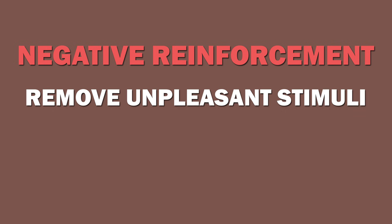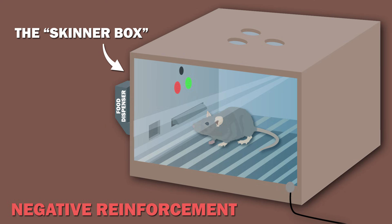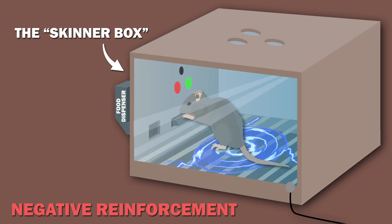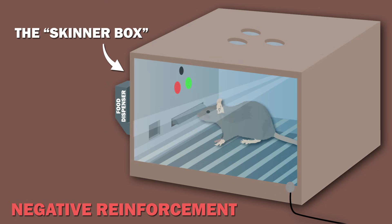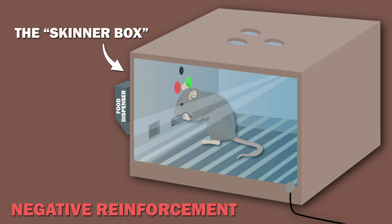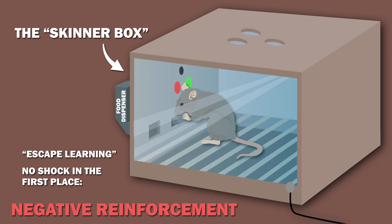Negative reinforcers remove unpleasant stimuli. To demonstrate this, Skinner put a rat in a box which had a mild electric current that caused the rat discomfort. On wandering around the box, the rat randomly hit a lever to turn the current off. When exposed to the electric current, the rat learned to always press the lever — something called escape learning. Skinner eventually also taught the rat to flip a switch that prevented the electric current from being turned on in the first place, something called avoidance learning.